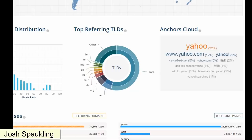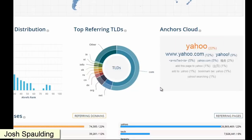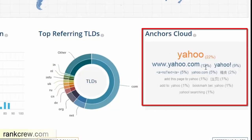I plugged Yahoo.com into ahrefs.com to analyze their anchor text, and it was surprisingly nearly perfect as far as what we shoot for with anchor text these days. This is what we're seeing with our own websites that are ranking, and it's what other SEOs are training and teaching. Yahoo.com's anchor text breakdown is very similar because Yahoo is perfectly natural — it's one of the biggest websites out there and most of the links it gets are 100% natural.